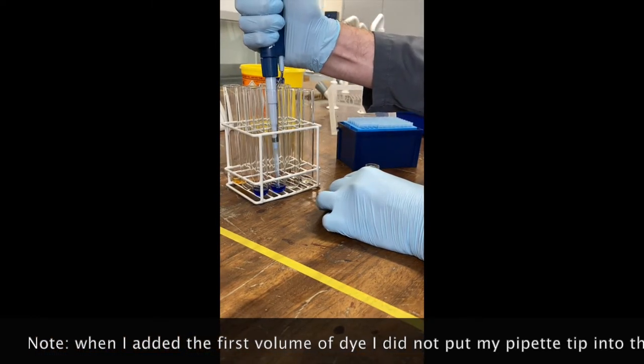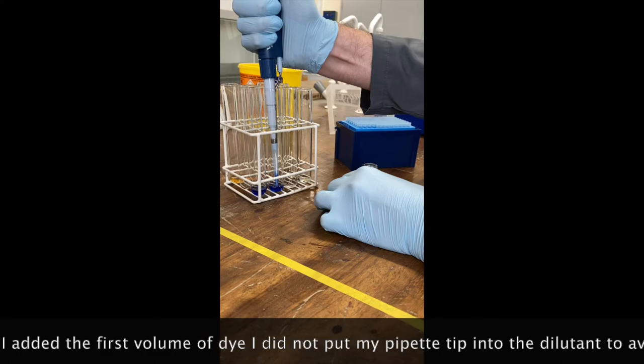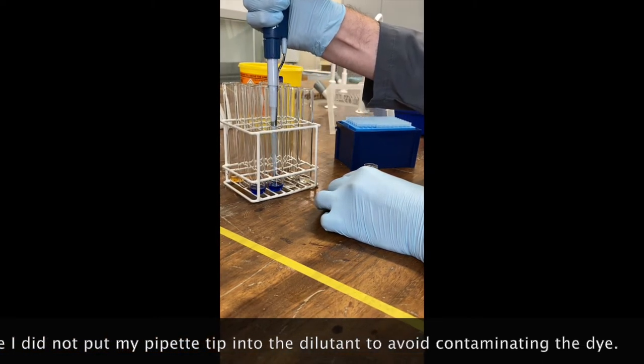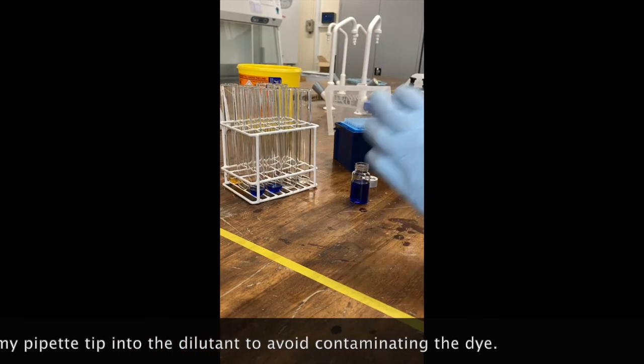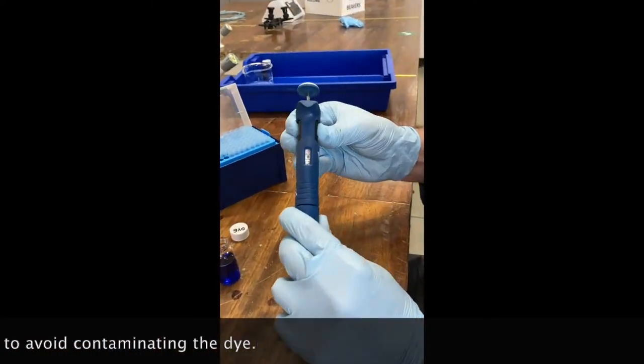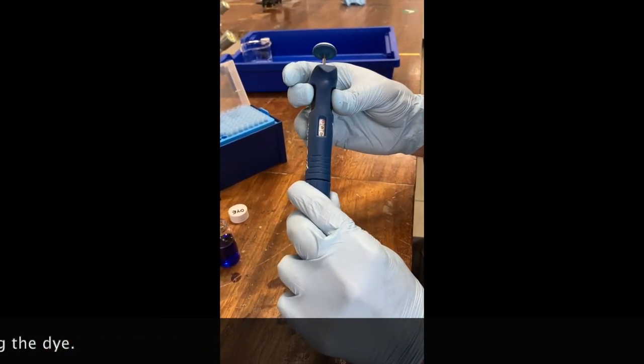And then what you want to do is you just want to make sure you pipette up and down a few times, gently, just to make sure you properly mix your solution. For the second tube, I'm going to have one mil of water. So I'm going to need to put one mil of my standard solution in.